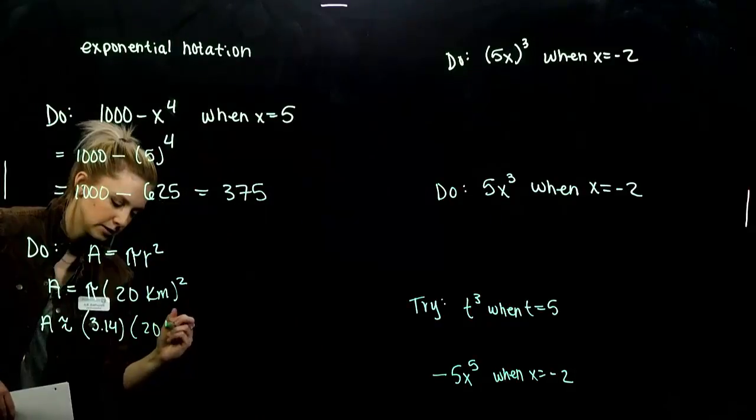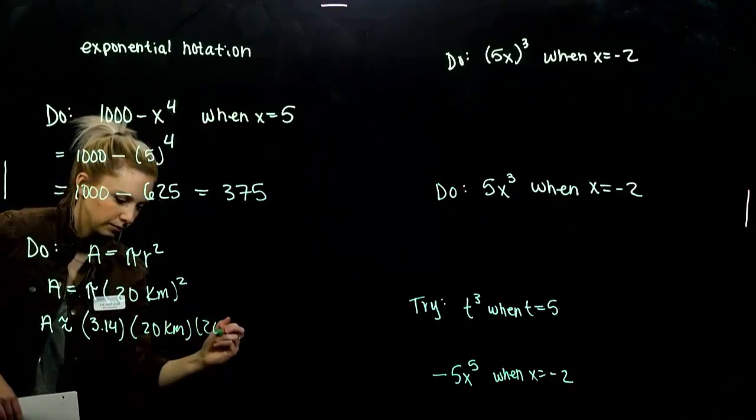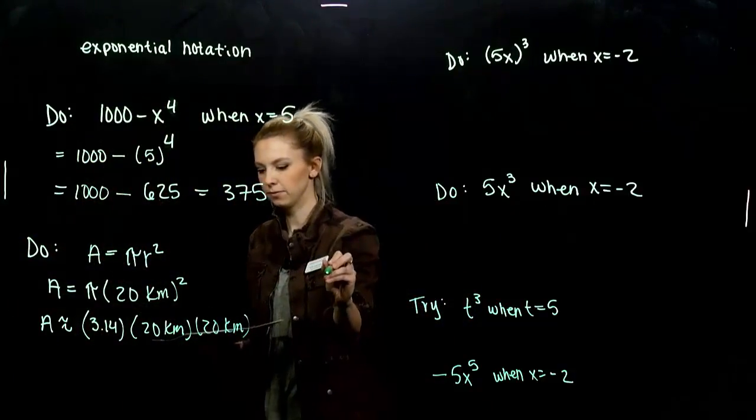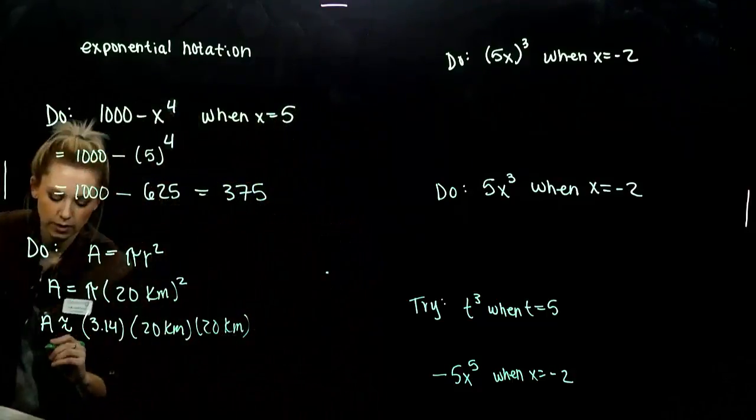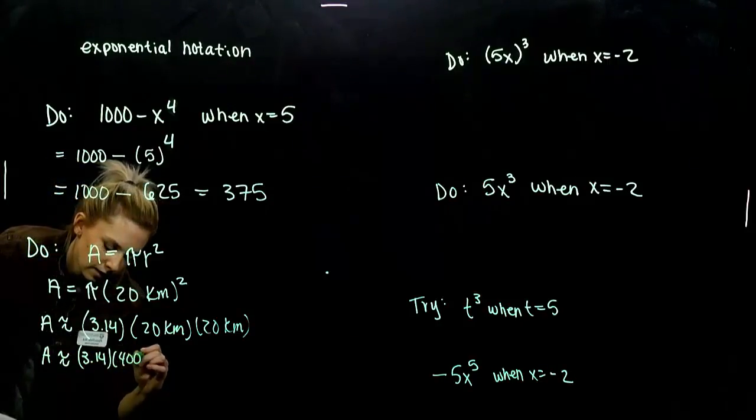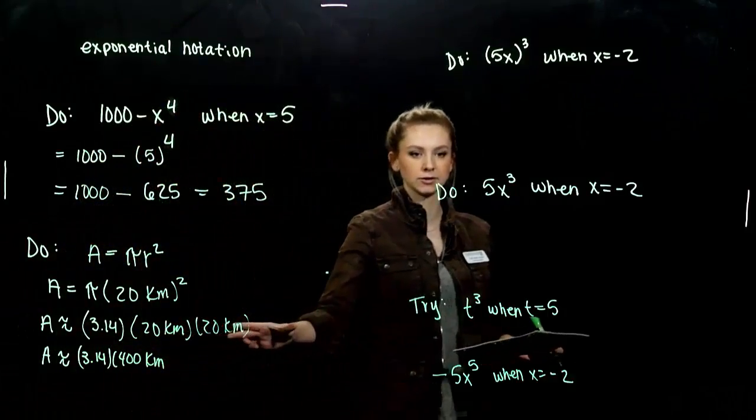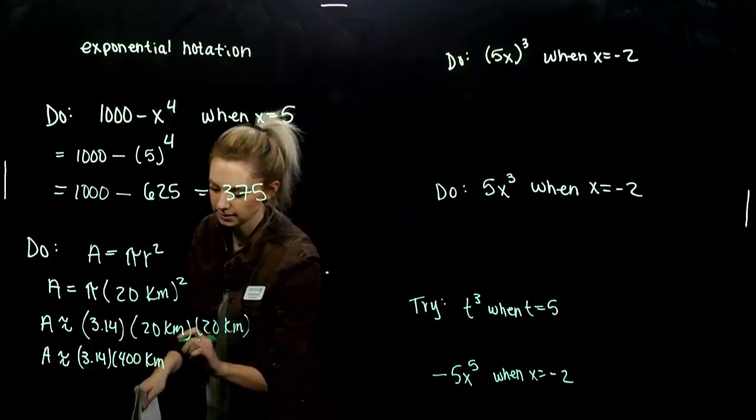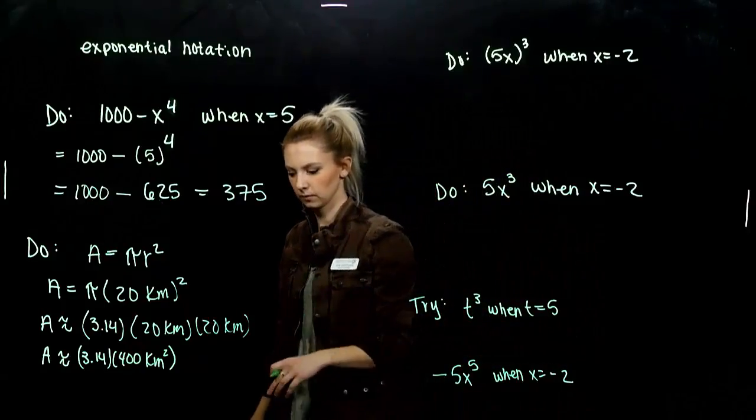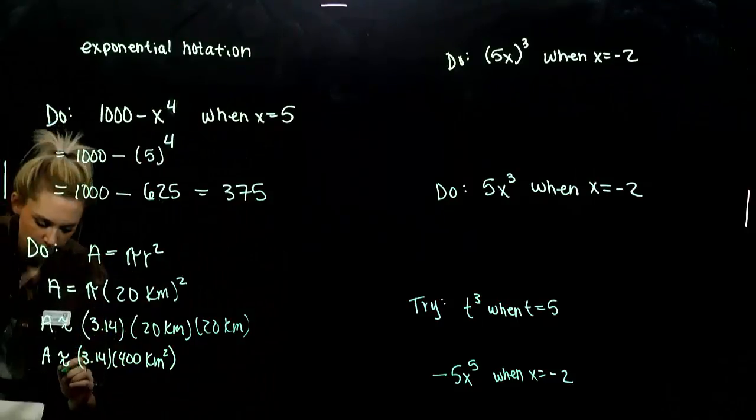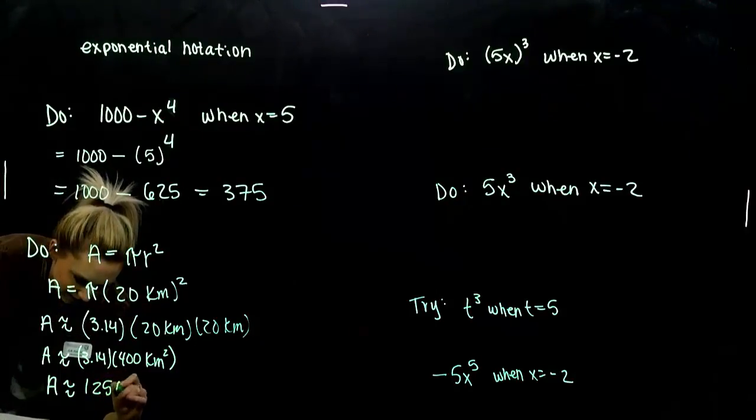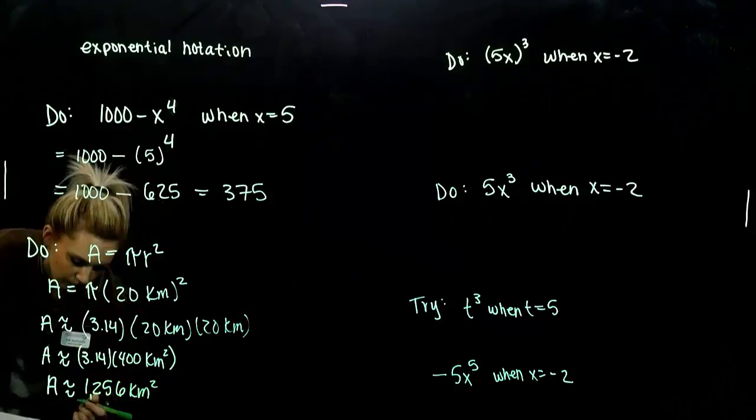This times itself, two times in total. As we start to simplify, what are we looking at? I have 3.14. 20 times 20 will give me 400. I've got 3.14 times 400. And how many factors of that kilometers do I have? Two of them. So I can sum that up nicely and say 400 kilometers squared. If we do that math now, 400 times 3.14, our area of this funny circular thing is around 1,256 square kilometers.